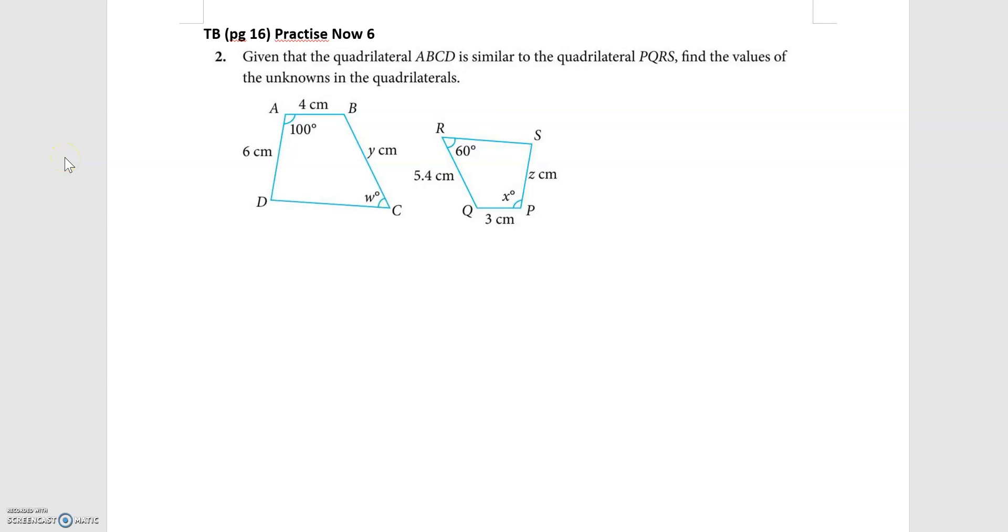Given that the quadrilateral ABCD is similar to the quadrilateral PQRS, we need to find the values of the unknowns. So I have four unknowns here for this question. Now I'll do the same as what I have done for the first question, which is to first draw the two quadrilaterals in the corresponding orientation.